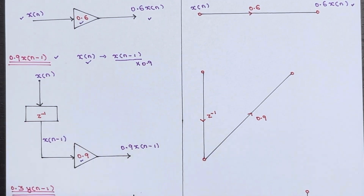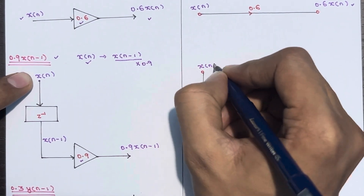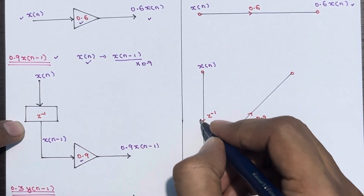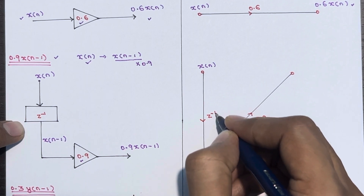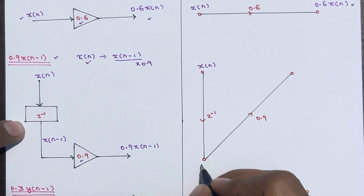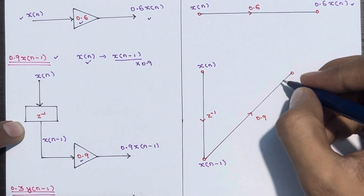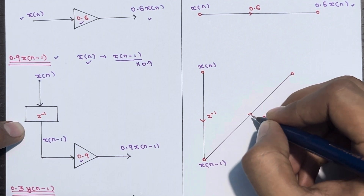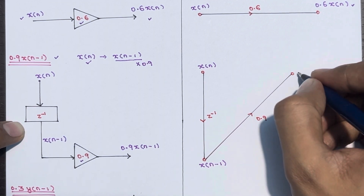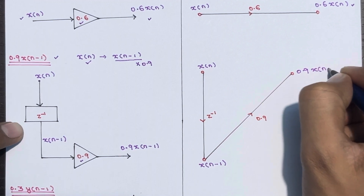Now the equivalent signal flow graph for this part: x(n) is the input node; mark an arrow and write z⁻¹ to represent the unit delay element. At that next node you get x(n-1). Then going to the next direction with a branch gain of 0.9, at that node you get 0.9·x(n-1), achieved.